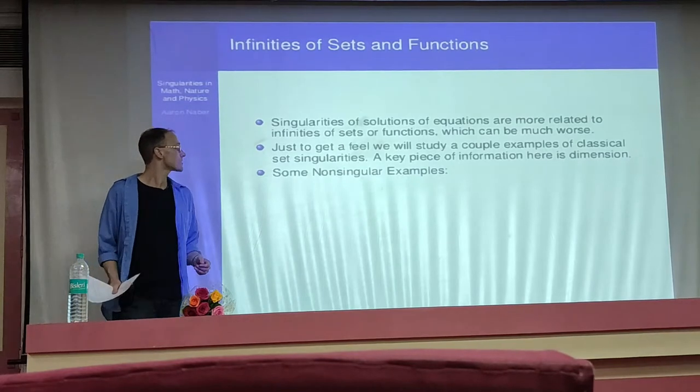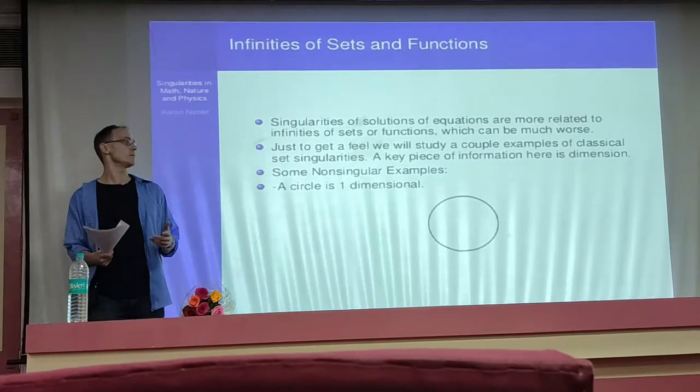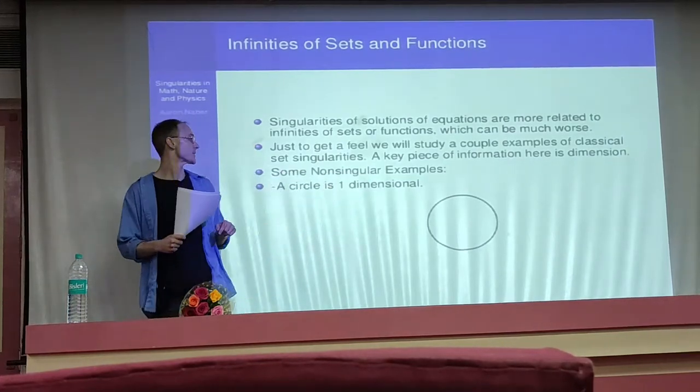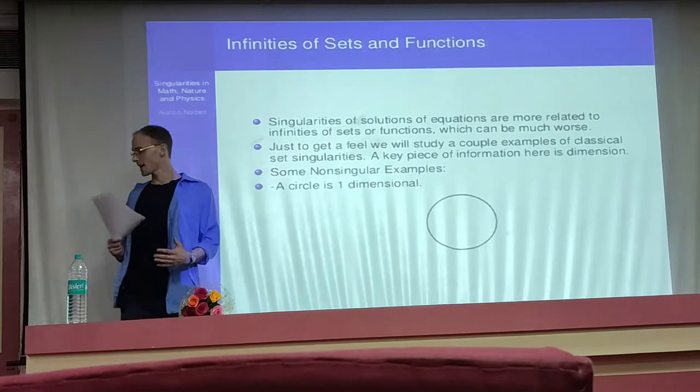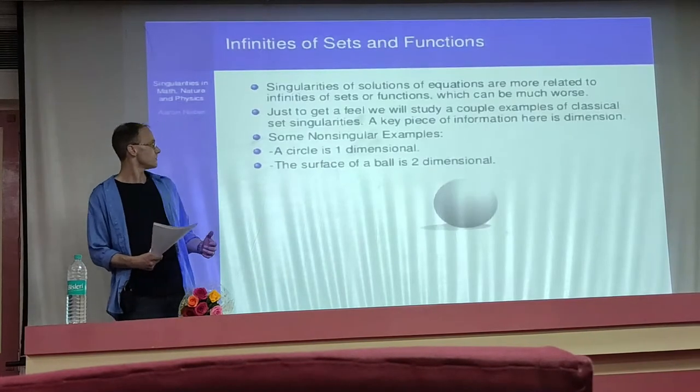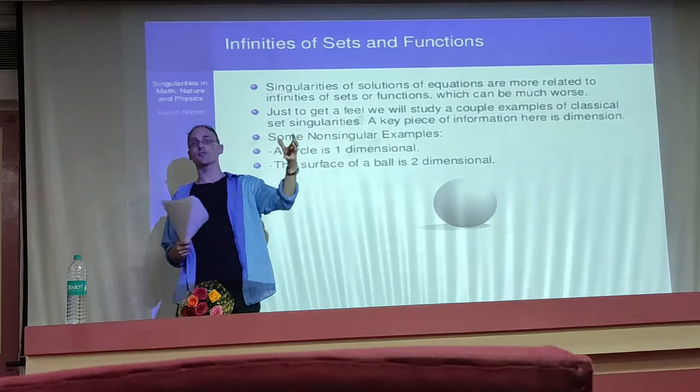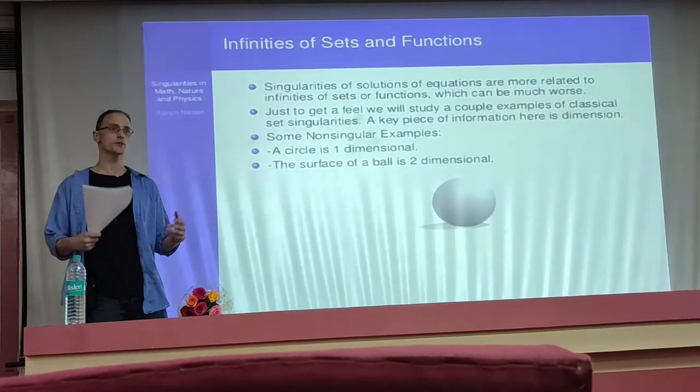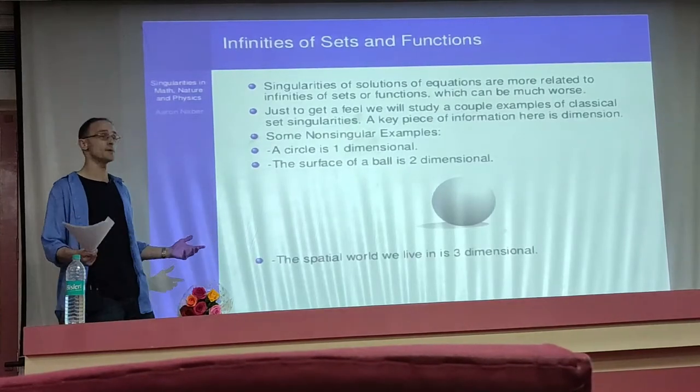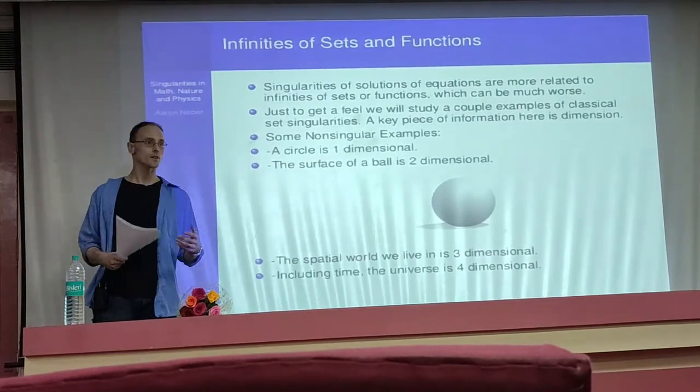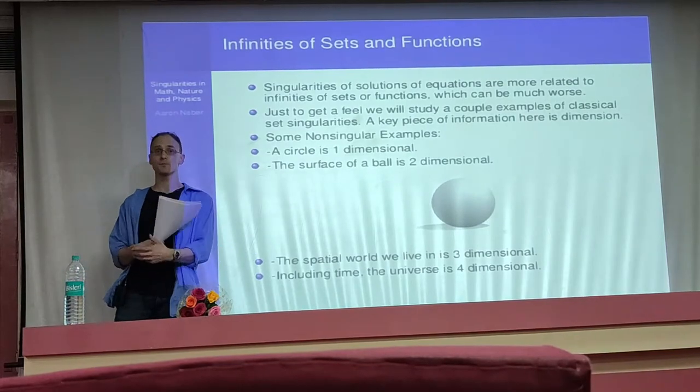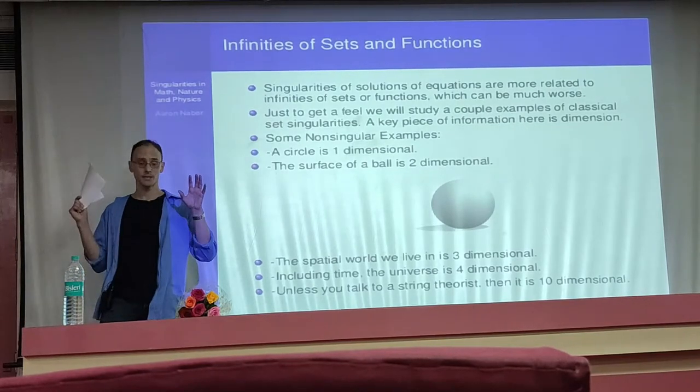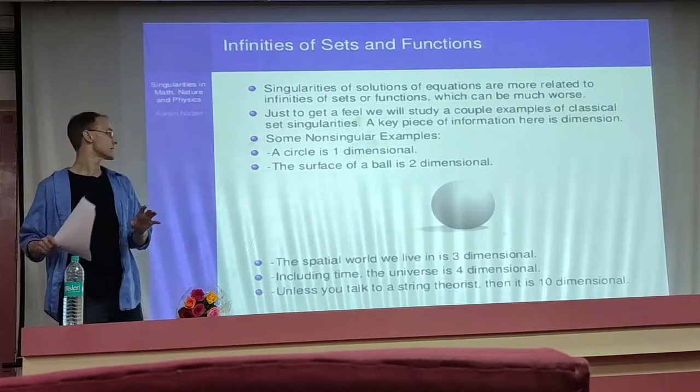Some non-singular examples. The first is a circle. Say it's one-dimensional. We can all picture this. The second example would be a sphere. This is like the surface of a basketball or your countertop, the surface of the earth. It's two-dimensional. The next example would be like three dimensions. This is the space we live in. The example after that would be that if you include time, the universe becomes a four-dimensional object. Unless you're talking to a string theorist, at which point it becomes a ten-dimensional object.